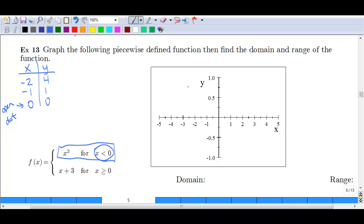So, if we plot those points, we've got the point negative 2. So, if we look to graph these points, we can go negative 2, 4 would be about here. Negative 1, we were at 1, which would be about here. And then we have that open dot at 0, 0.